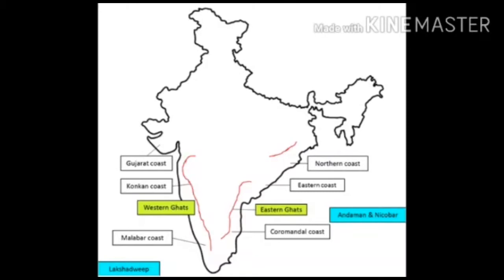Many ports are found along the coast and they are important for inland and foreign trade. Trade means the exchange of goods. Fishing is an important occupation and the export of fish is an important industry in the coastal plains.